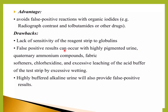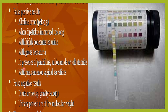Advantages include that it is very easily done and it avoids false positive reactions with radiographic contrast media, tolbutamides, and other drugs. The drawback is that it lacks sensitivity to globulins — it is more sensitive to albumins. False positive results can occur with concentrated urine, gross hematuria, pus, semen, or vaginal secretions. False negative results may occur with very high specific gravity urine, dilute urine, or low molecular weight urinary proteins.